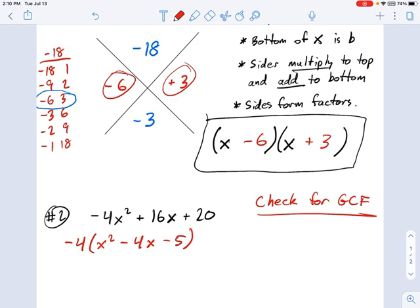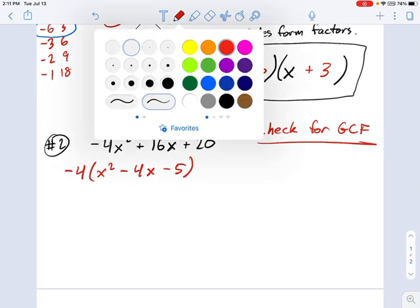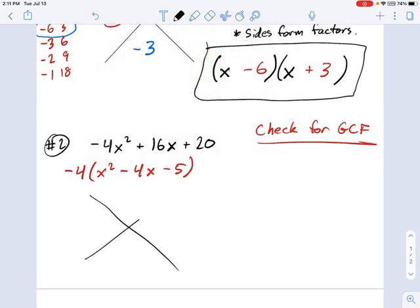And here's what we have. X squared minus 4x minus 5. That's what we're really trying to factor. That negative 4 is just a factor out front. So let's go ahead and make ourselves a big X again and work through this.